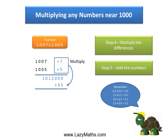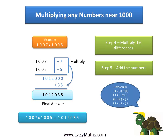Now we take 35 and add it to the 1,012,000 we got before, to get the final answer of 1,012,035. So 1007 times 1005 equals 1,012,035. And that's it. Thank you.